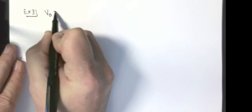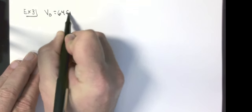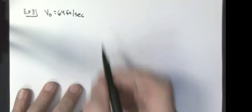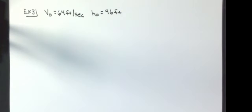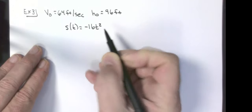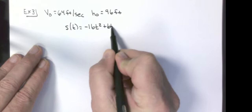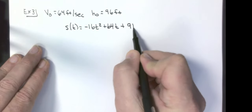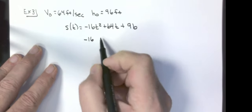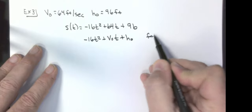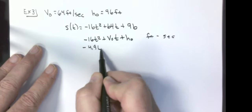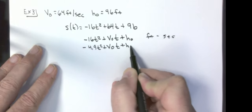It says I'm throwing a stone upward with an initial velocity of 64 feet per second from an initial height of 96 feet. By Newton's laws of motion, the position of the stone after any given time can be given by an equation. This is S of T equals negative 16T squared plus initial velocity times time plus initial height. This is if we're in feet per second — or negative 4.9T squared plus initial velocity times time plus height if we're in meters and seconds.